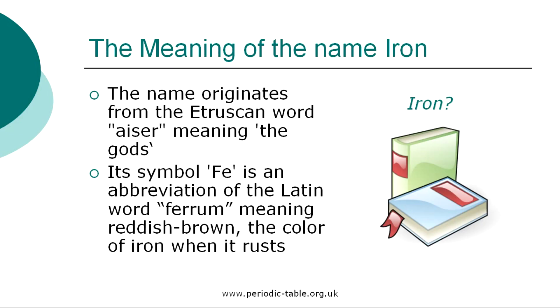Iron appears silver gray before it is exposed to air. Once it rusts, it becomes reddish brown on the surface.